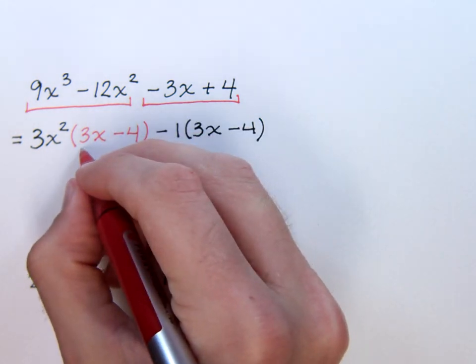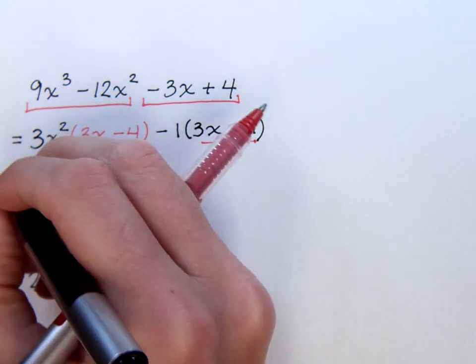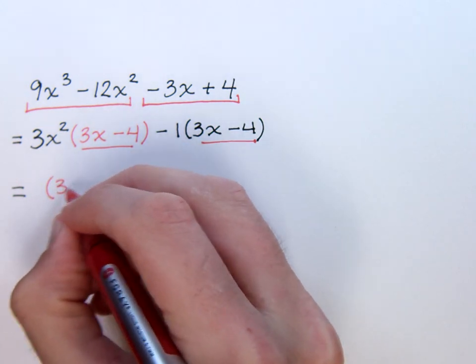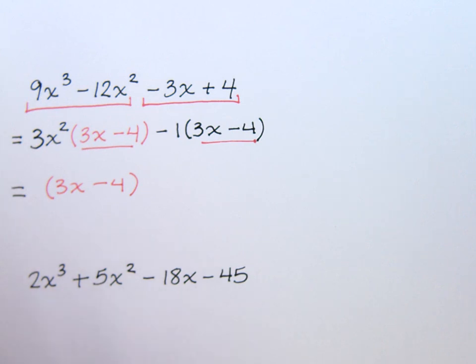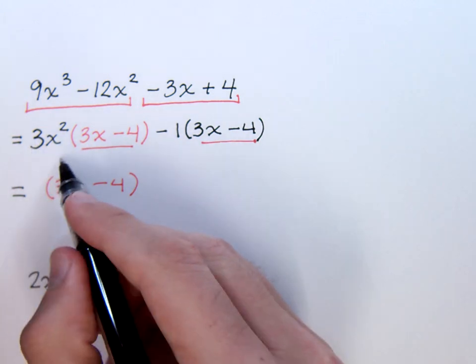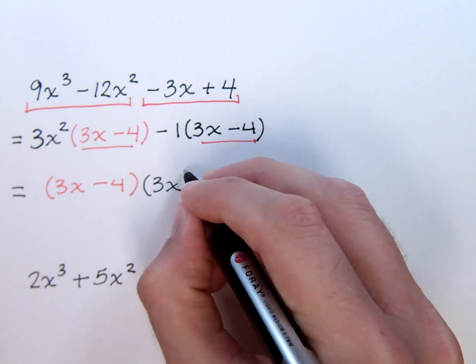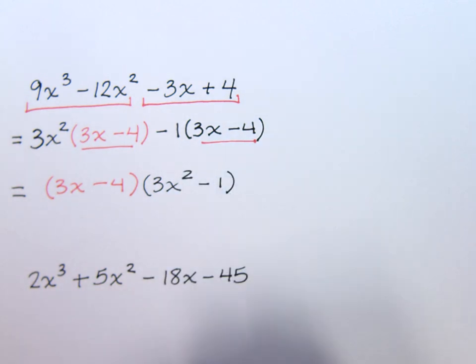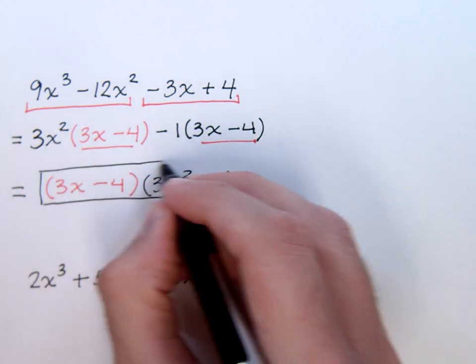So, the three x minus fours are going to match up, and that's what I'm going to pull out in front of my factorization. Here's three x minus four, and then I'll write what's left over, which of course is going to give me the three x squared and the minus one. So, here is my factorization.